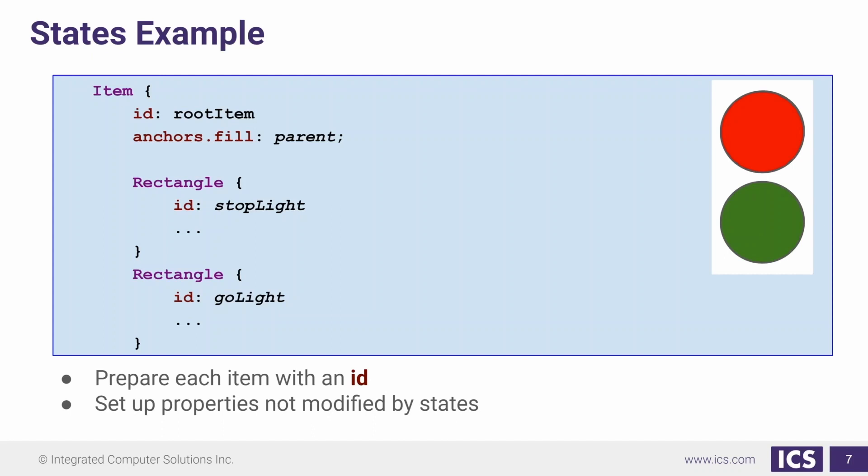Before we can really define any states, we have to set up our application a little bit. In our simple example, we're going to set up something similar to a stoplight. We're going to have two lights. We've given them both IDs, stoplight and golight respectively, and this is important so that we can refer to the items later by their IDs when we want to change their properties.